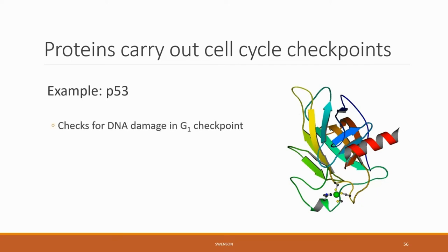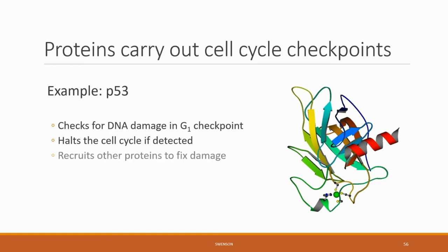For example, p53 checks for DNA damage for the G1 checkpoint and will halt the cell cycle if detected. It will recruit other proteins to fix the damage or initiate cell suicide, named apoptosis, if damage cannot be repaired, in order to prevent such a sick cell from reproducing.